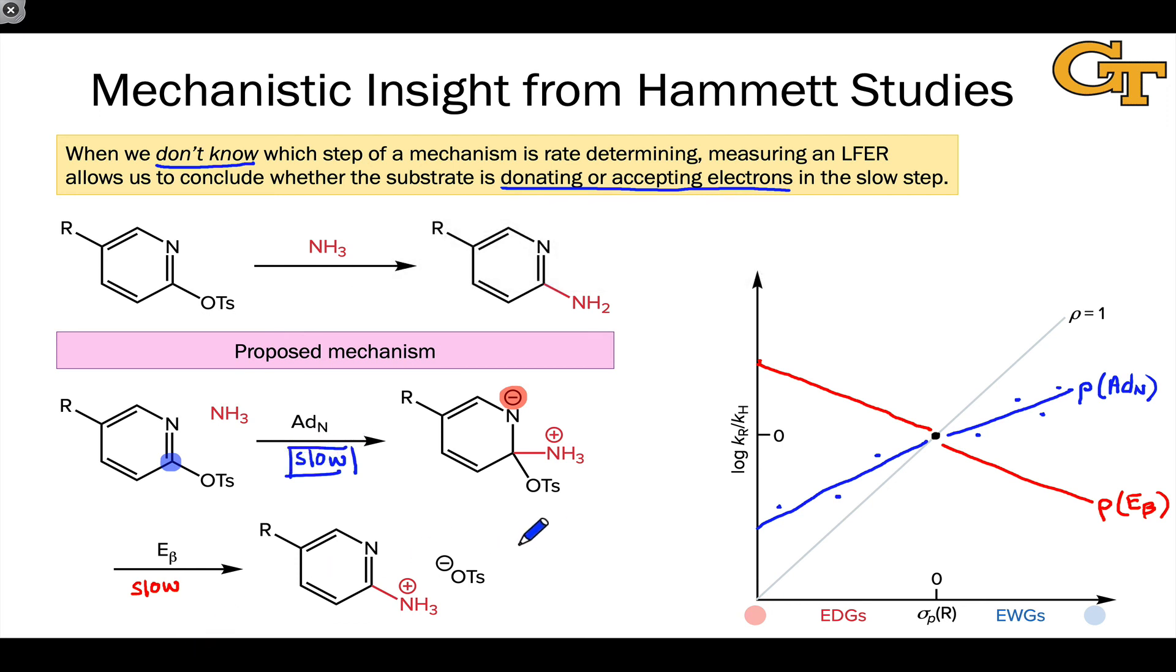I hope this video has shown you that we can get great mechanistic insight from Hammett studies—specifically the electronic nature of the rate determining step in multi-step mechanisms where the substrate is giving electrons away, accepting electrons, and many different electronic movements are occurring. This is the power and beauty of Hammett studies.